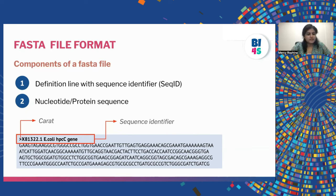In the IUPAC degenerate base table, we can see the alphabets and their meanings. A means adenine, C means cytosine, G means guanine, and T or U means thymine (or uracil in RNA). The new alphabets include M, R, W, S, Y, and others. For example, if we see M in a FASTA file, it means that position can be either A or C. If we see Y, it can be either C or T. And if we see N, it means it can be any of the four bases — A, T, C, or G. This is why we get degenerate bases in a FASTA file and how we interpret them.